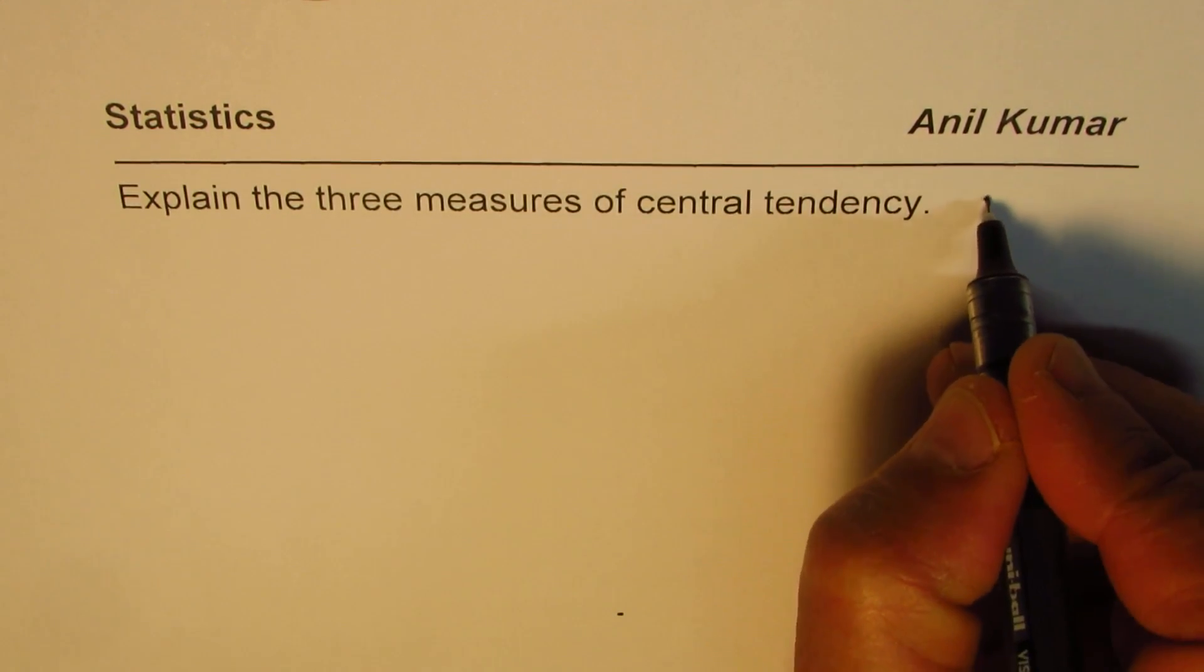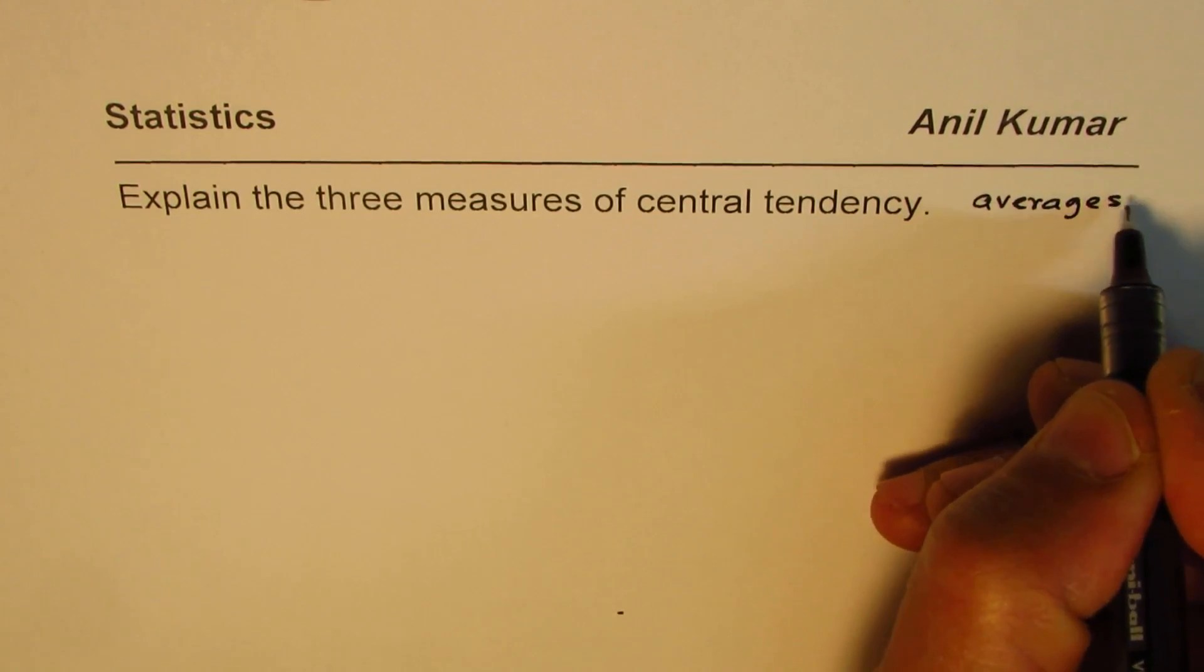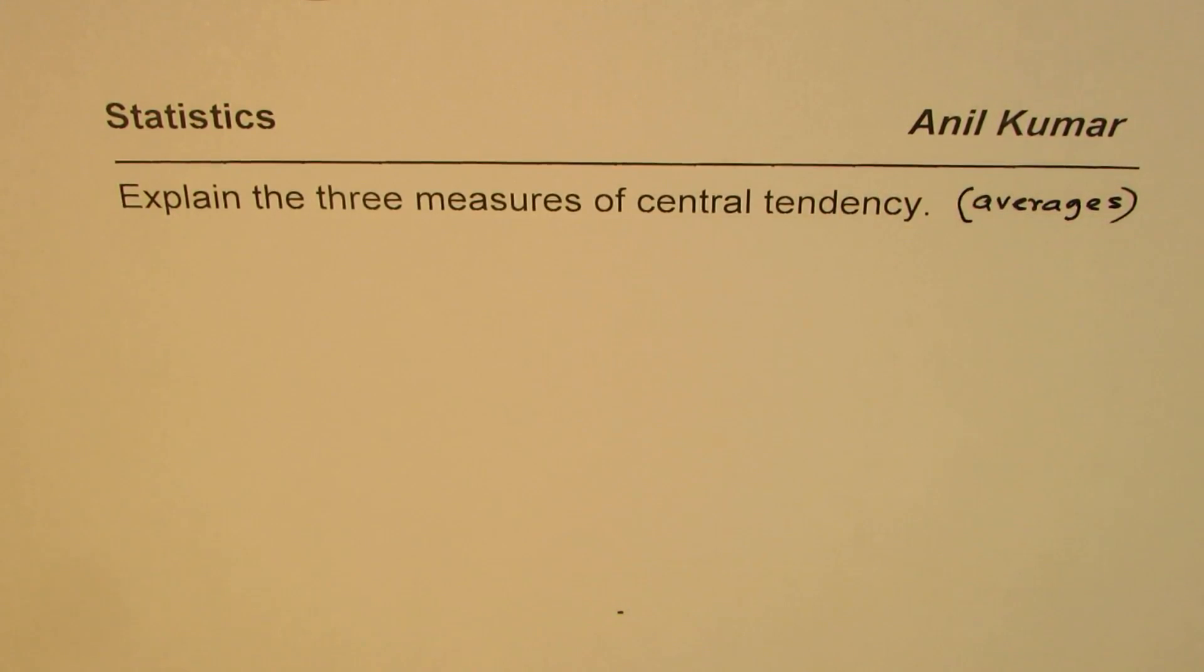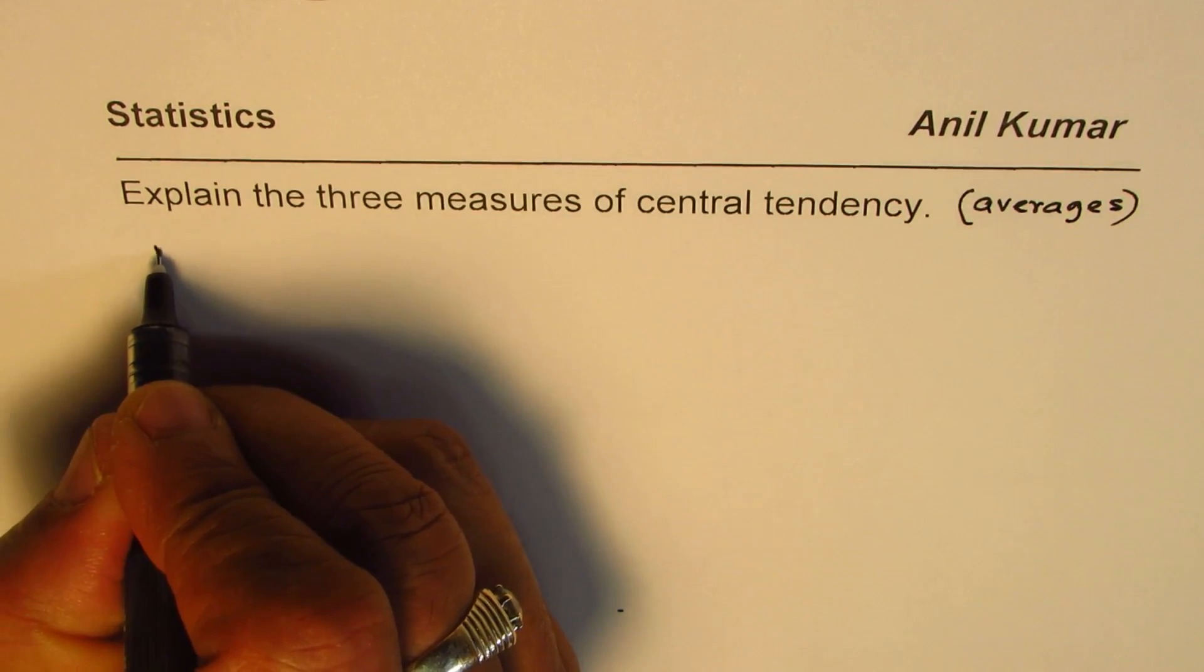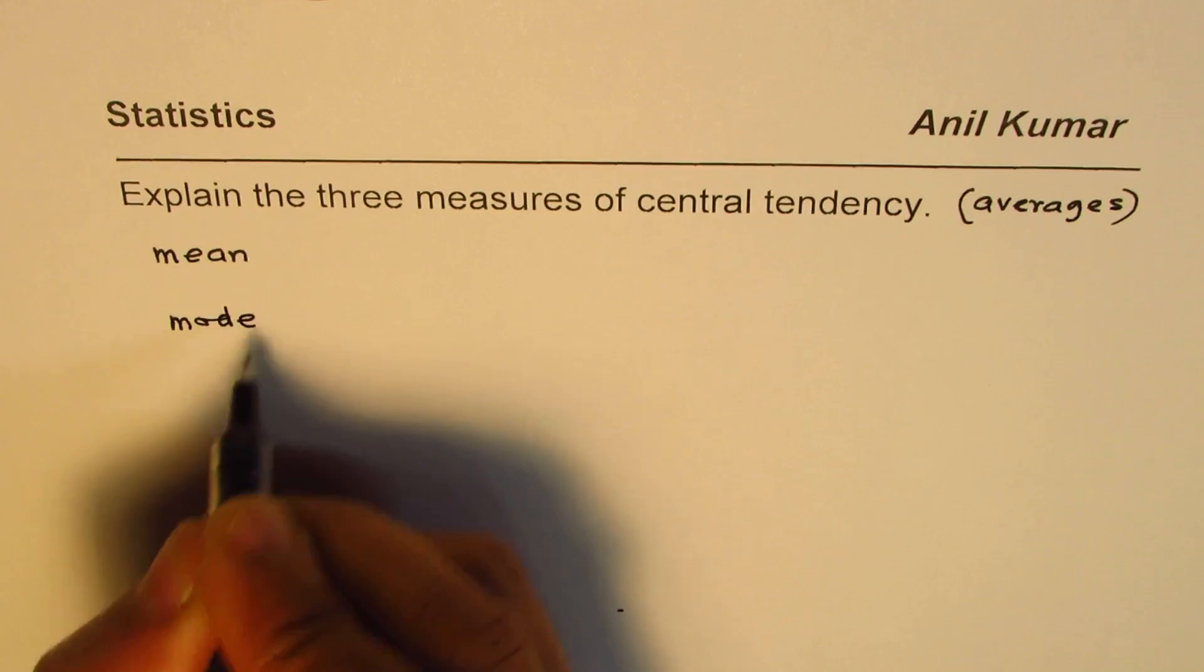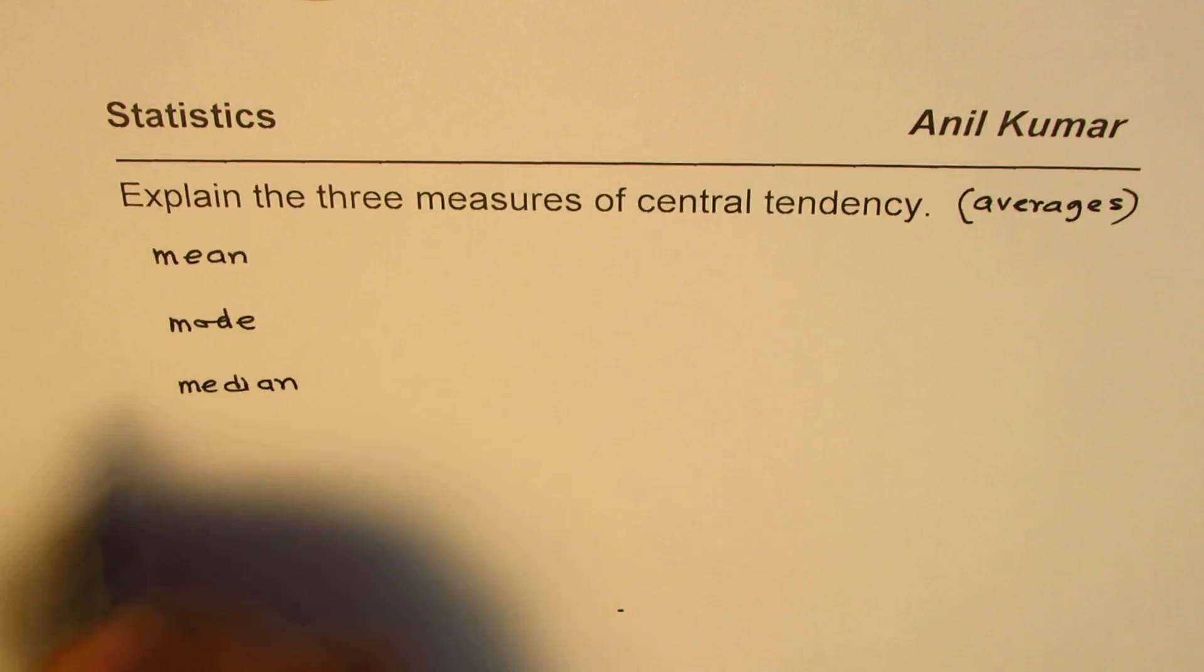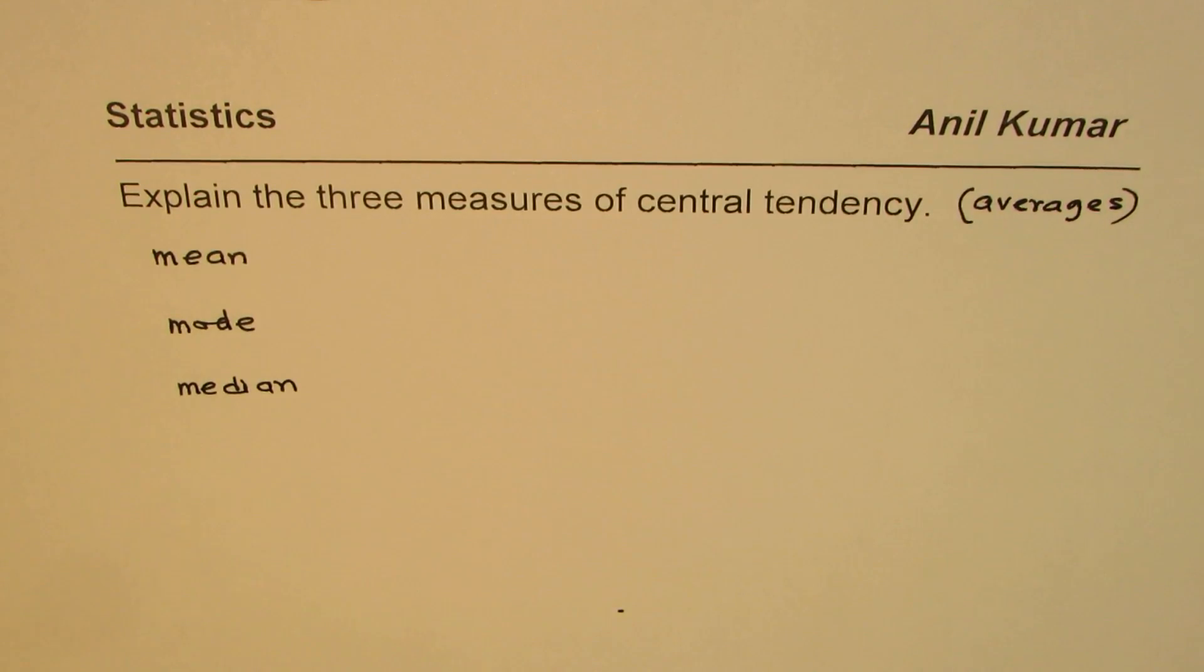We also call them averages, right? So what are the three measures of averages when we are discussing statistics? Well, these three are mean, mode, and median. So these are the basic three measures of central tendency.